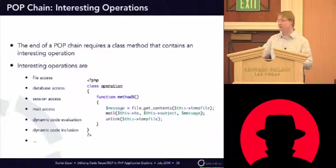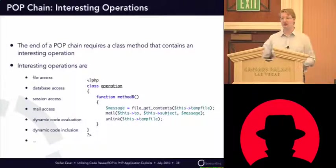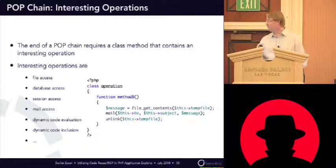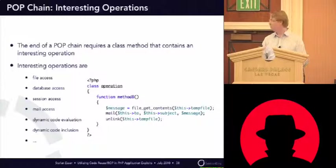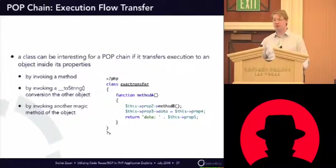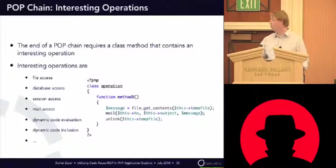So if you find this somewhere in the application, you can completely control what it does because you have control of all the properties. You can choose any file because you can set the temp file property. You can choose the recipient of the email and the subject of the email. Most of the time, files you want to steal are not writable anyway, so the unlink will just error. This is implemented in method B, so you would have to combine it with the previously found code-flow transfer object that called method B of property two. And because you also have control of property two, you can just tell property two to be an object of type operation.